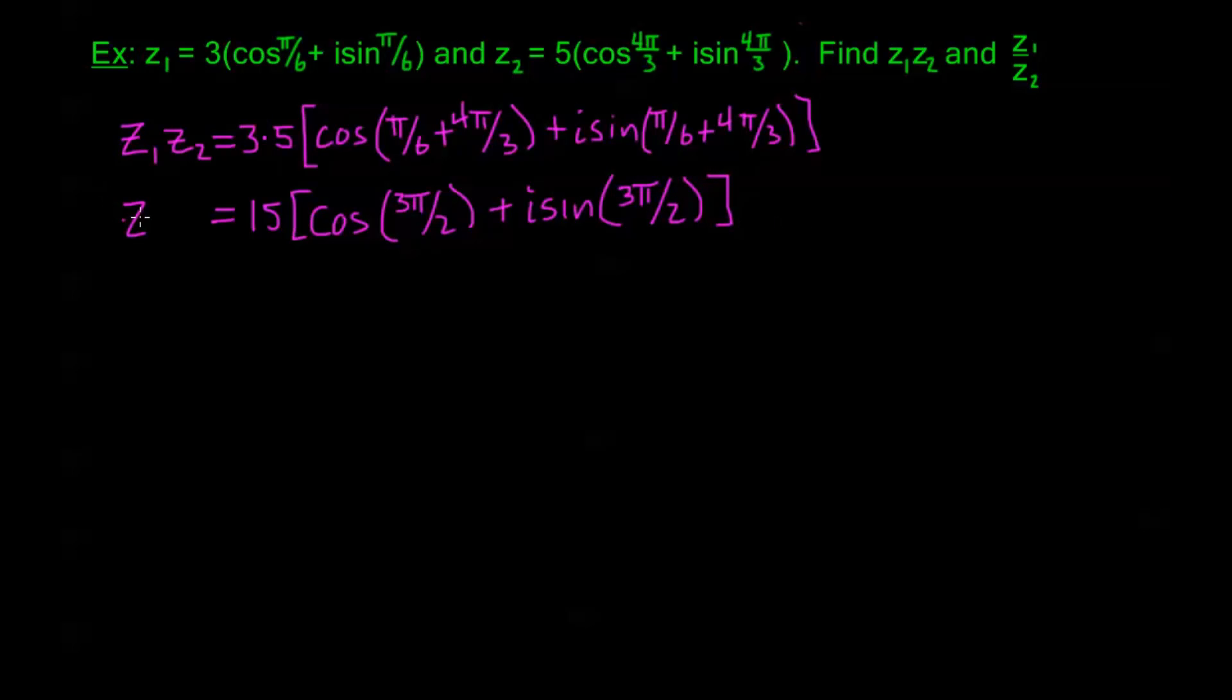You can leave your answer just like this if it asks for polar form. If it gives you a problem in polar form and doesn't specify how it wants the answer, you can always leave it in polar form. If it specifies that it wants it in A + Bi, then we just go ahead and plug in.